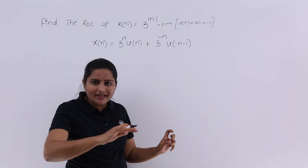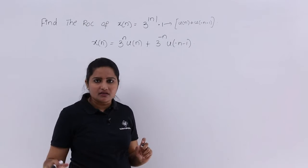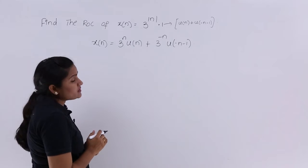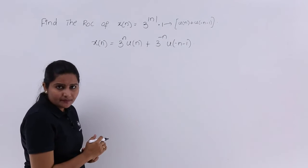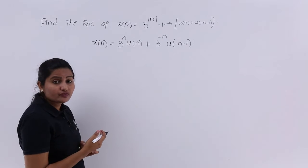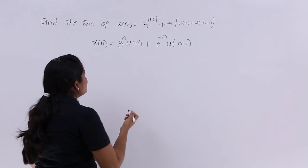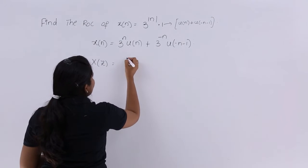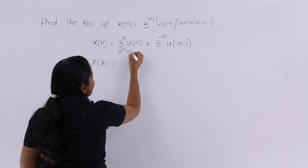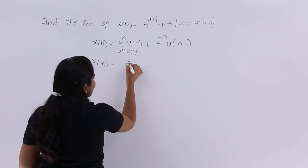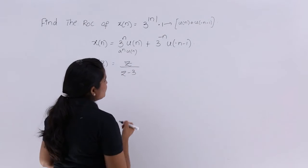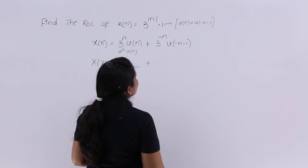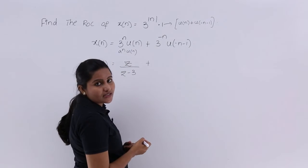Now I want to discuss the Z-transform first, because they are asking for the ROC — the region of convergence. First we need to get the Z-transform of the signal. Considering the Z-transform of the signal, this is in the form of a^n · u(n), so I am writing this as Z/(Z - a), that means Z/(Z - 3) as this transform. And here I am having 3^(-n) · u(-n-1).